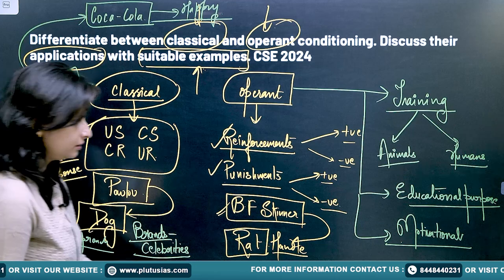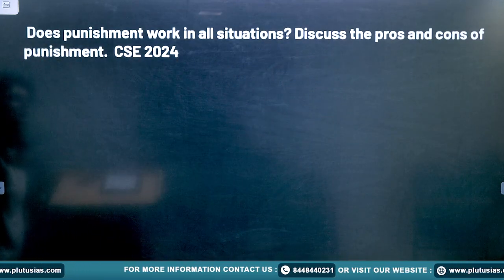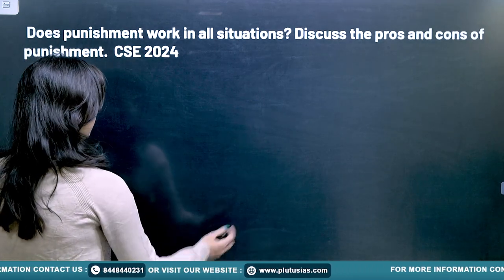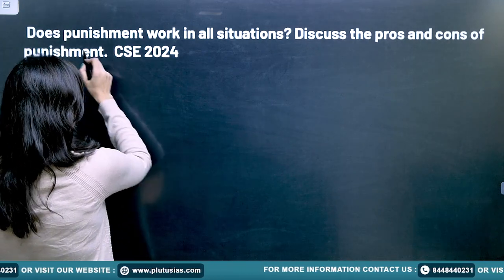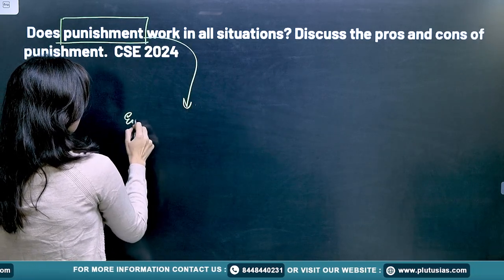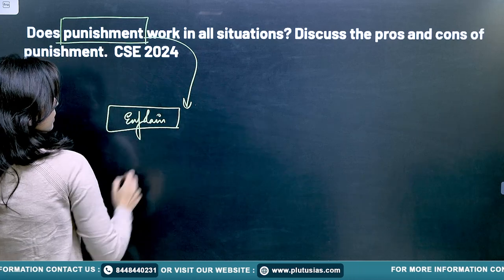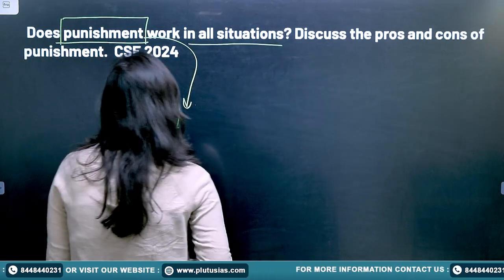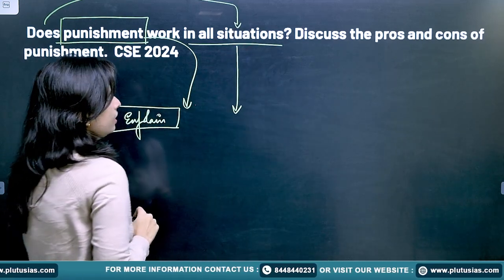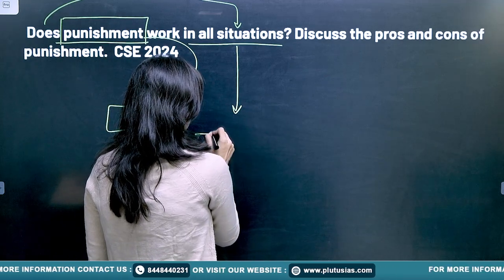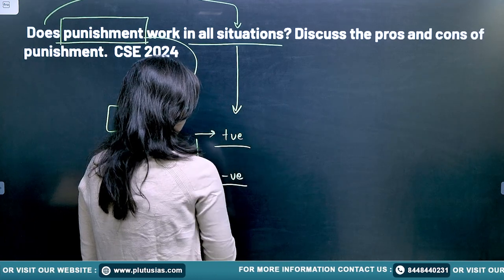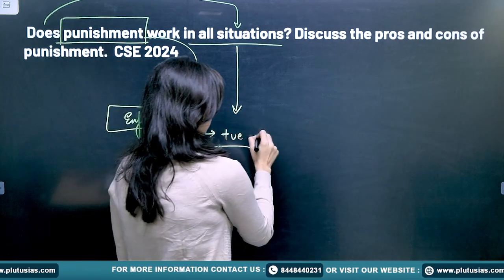The next question is: does punishment work in all situations? Discuss the pros and cons of punishment. In the last question they talked about conditioning, and here they are talking about punishment specifically. You have to explain punishment and whether it works in all situations. You have to talk about positive punishment and negative punishment.